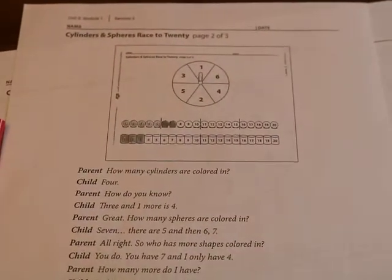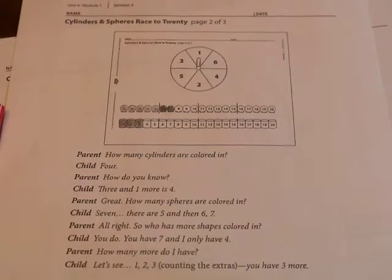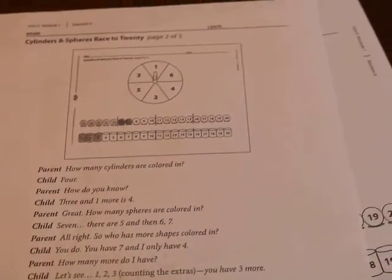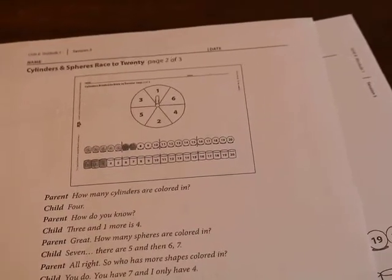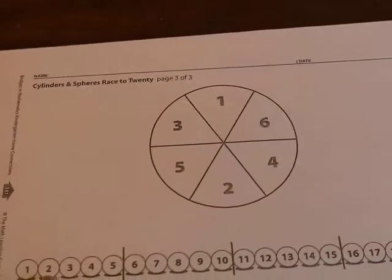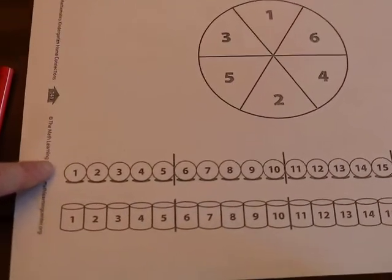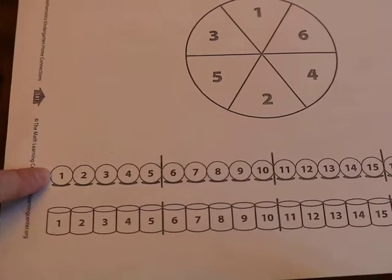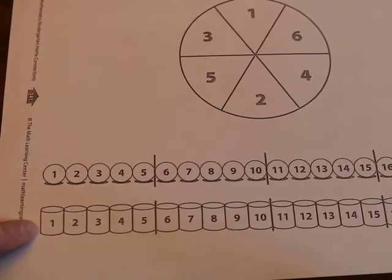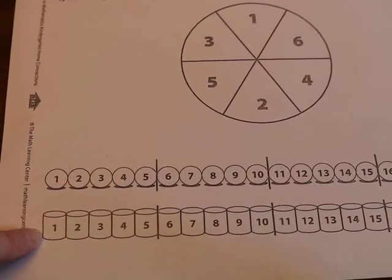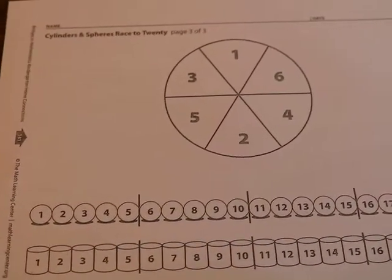These directions are just to help mom or dad or whoever's playing with you. You're going to each choose a shape. Your shape choices are spheres, the little spheres, there's a row of spheres, or cylinders.